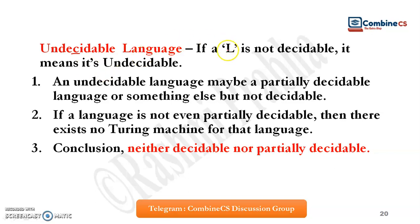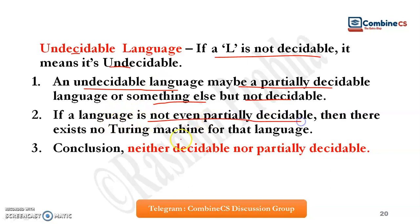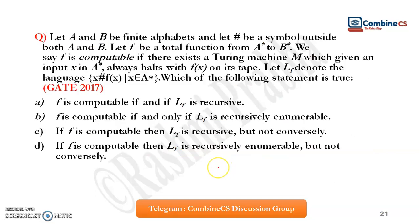What is undecidable? If L is not decidable, it means it is undecidable. An undecidable language may be a partially decidable language or something else, but it is not decidable. If a language is not even partially decidable, then there exists no Turing machine for it — neither decidable nor partially decidable.